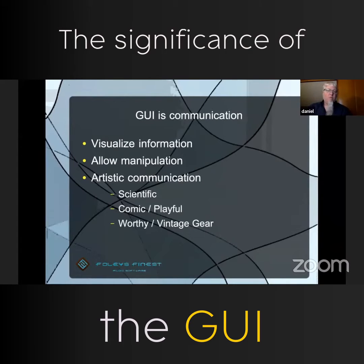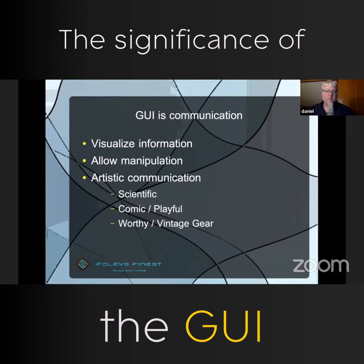So what is a GUI? Why do we use it? We use our ears — we work not visually — but the GUI is actually a great way to communicate and visualize the information. So we have our ears free to hear what we actually manipulate.